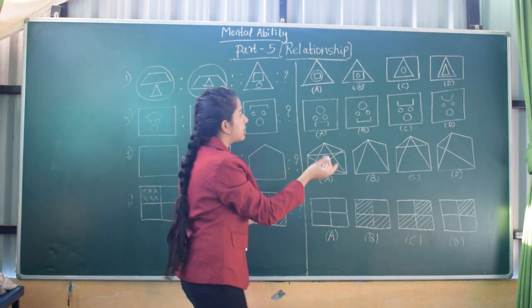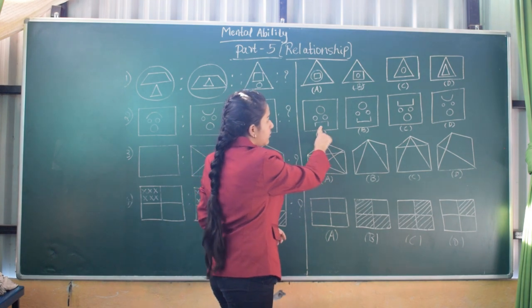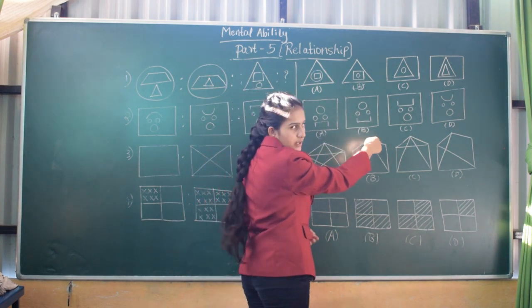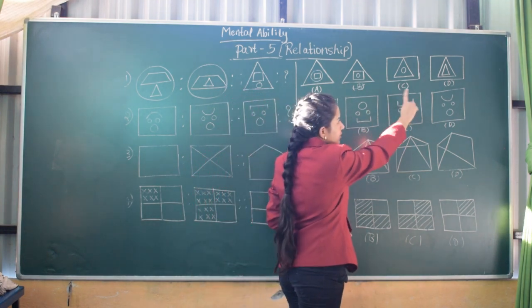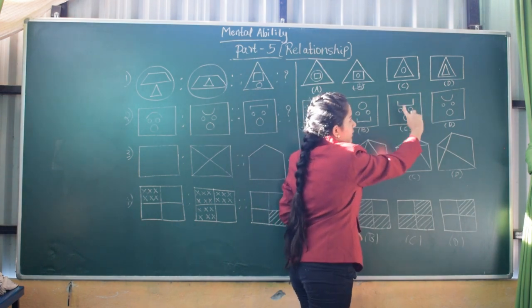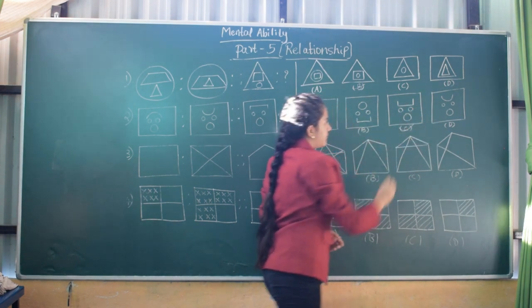We will find where that answer is. Here it is pointing down, here it is also below the circle, here it is in the upward direction as we want, and in the last option a U-shape appears instead of this box. So the third option is the answer.